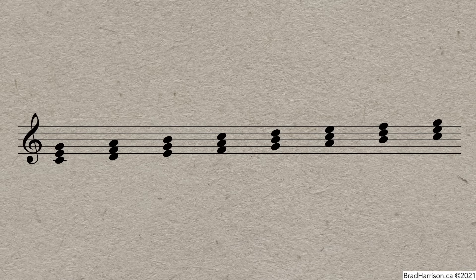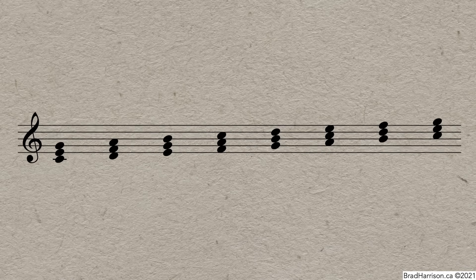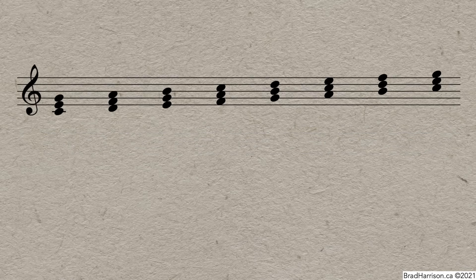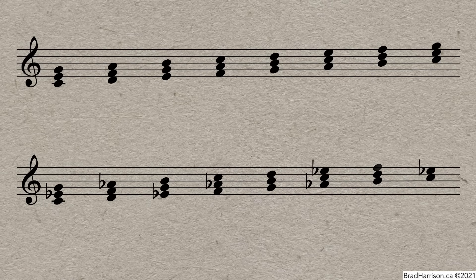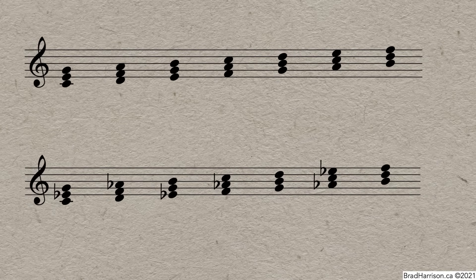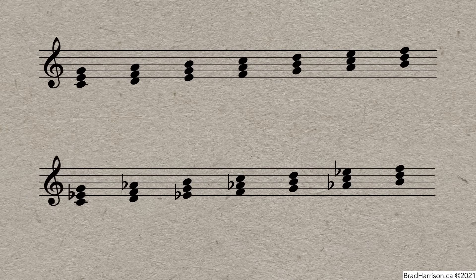These chords are fundamental to a wide variety of genres and music traditions, as are the triads derived from the harmonic minor scale. Triads are often referred to numerically by their relationship to the home key. If C is one, D is two, E is three, and so on.